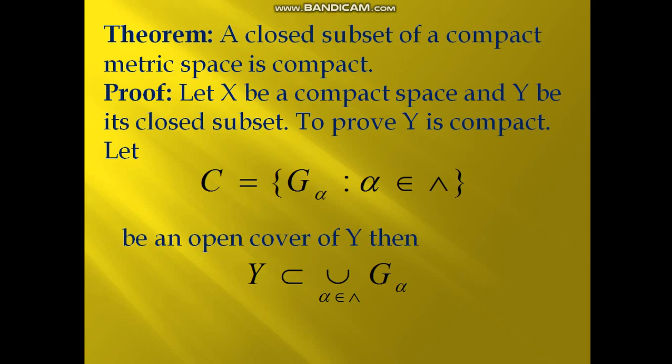Today we will discuss an important theorem. The statement of the theorem is: a closed subset of a compact metric space is compact. That is, if we have a compact metric space and it has a closed subset, then the closed subset will be compact.